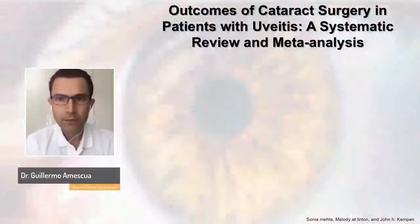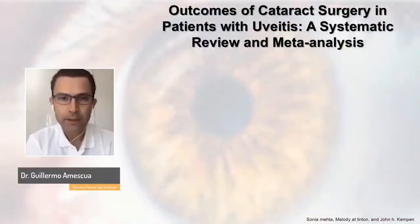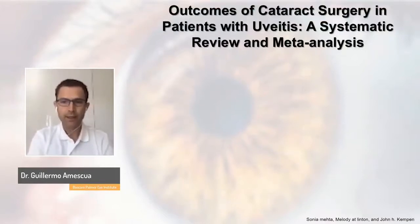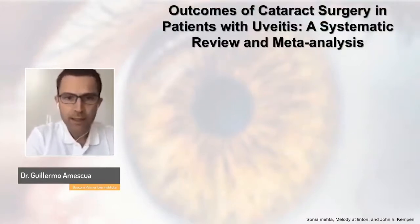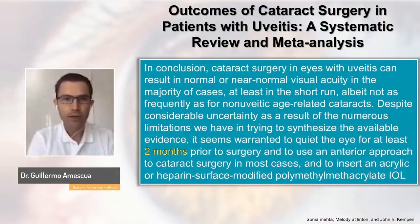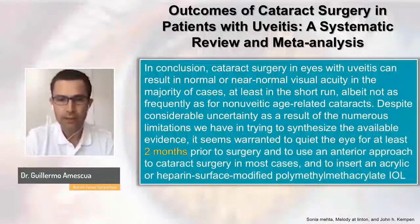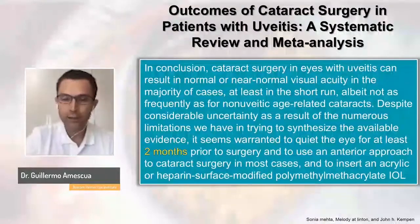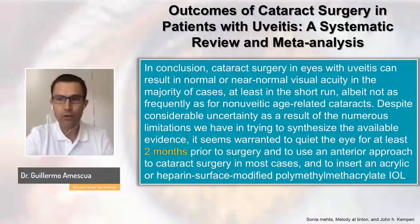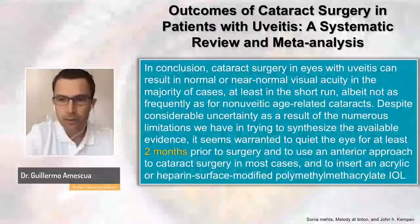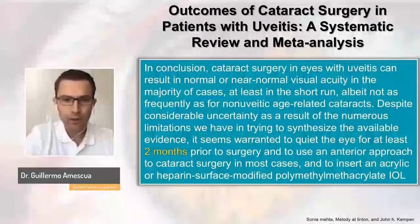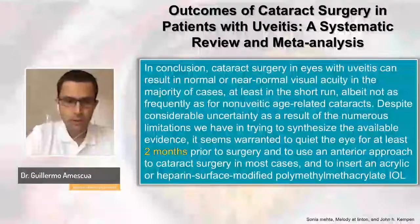This is a very good meta-analysis from Dr. John Kempen, an authority in the field of uveitis. He showed in his conclusions that cataract surgery in the setting of uveitis can result in normal or near-normal visual acuity in the majority of cases when they have a healthy macula and optic nerve. He found that with just two months of completely inflammation-free status, results can be quite good. Historically we are taught three months, but it depends on the patient and diagnosis.